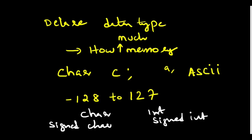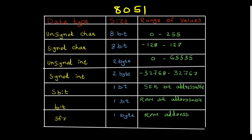Similarly there is a signed int. If you declare a variable as simply int or signed int, it can store a negative value also — this two-byte data can store from minus 32768 to plus 32767.